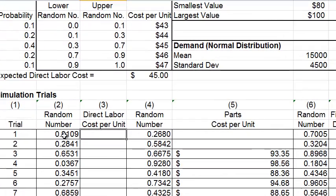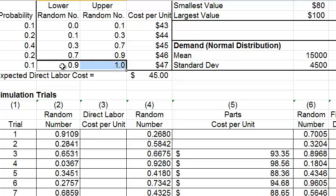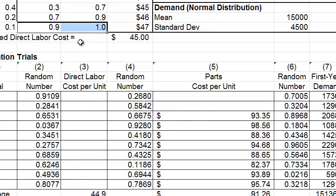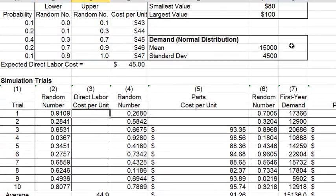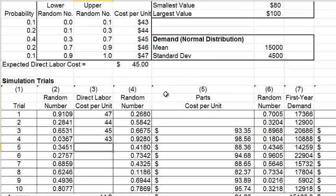After we simulate, we will see what we actually get. So later we're going to record the observed frequencies in this column. Random number 0.9109 - which interval contains 0.9109? It's between 0.9 and 1, so the direct labor cost would be 47. 0.2841 is between 0.1 and 0.3, that gives us 44. 0.6531 would mean 45. And 0.0367 is between 0 and 0.1, giving us 43. In a similar fashion, we could put in the rest of the column.